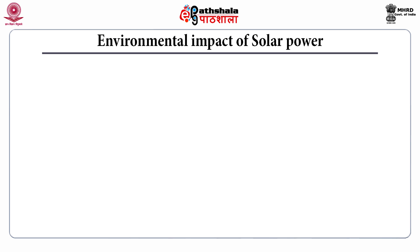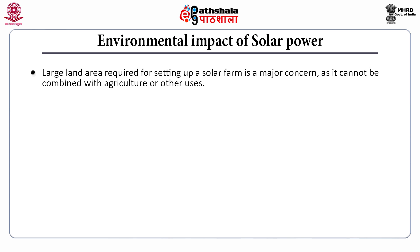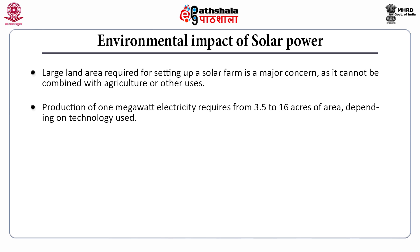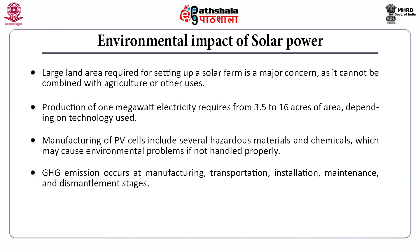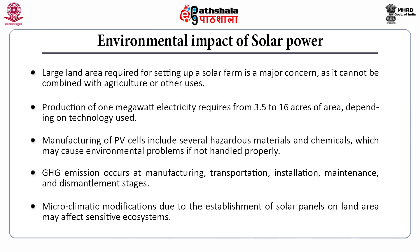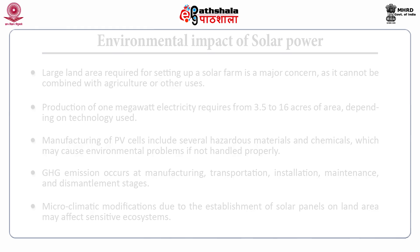What are the environmental impacts of solar power? Though it is a clean, everlasting and eco-friendly energy source, solar power is also associated with some environmental impacts. The large land area required for setting up a solar farm is a major concern as it cannot be combined with agriculture or other uses; producing 1 megawatt of electricity requires 3.5 to 16 acres of area depending on the technology used. The manufacturing of photovoltaic cells includes several hazardous materials and chemicals that can cause environmental problems if not handled properly. Greenhouse gas emissions occur at the manufacturing, transportation, installation, maintenance and dismantlement stages. Microclimatic modification due to establishment of solar panels on land also affects sensitive ecosystems.